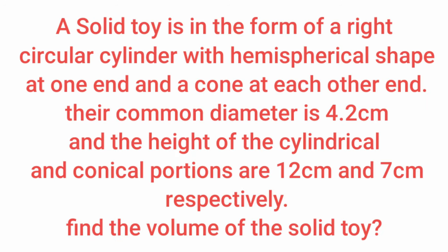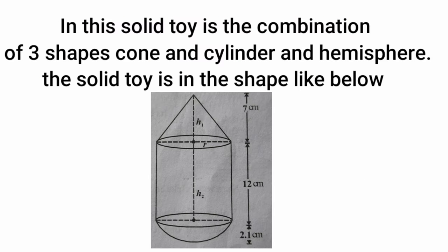Now let us solve a problem. A solid toy is in the form of a right circular cylinder with a hemispherical shape at one end and a cone at the other end. Their common diameter is 4.2 cm and the heights of the cylindrical and conical portions are 12 cm and 7 cm respectively. Find the volume of the solid toy. This solid toy is the combination of three shapes: cone, cylinder, and hemisphere.